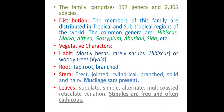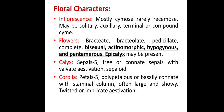Stem erect, jointed, cylindrical, branched, solid and hairy. Leaves stipulate, simple, alternate, multicostate and reticulate venation. Floral characters: inflorescence mostly cymose, rarely racemose. Flowers bractiate, bracteolate, pedicellate, complete, bisexual and actinomorphic. Calyx sepals 5, free or connate, sepals with valvate aestivation.